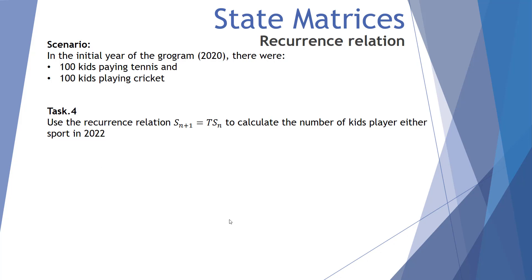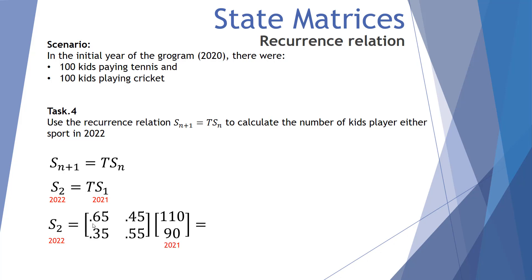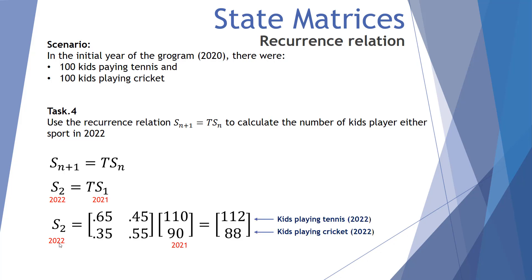Task four: use the recurrence relation again to calculate the number of kids playing either sport in 2022. We take our 2021 state matrix and multiply it by the transition matrix to work out S₂, our 2022 matrix. Multiplying them together, we find that in 2022 there will be 112 kids playing tennis and 88 playing cricket.